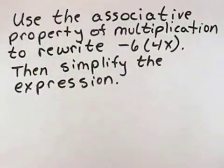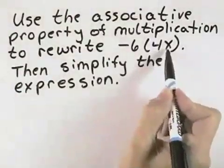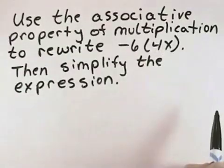Use the associative property of multiplication to rewrite negative 6 times the quantity 4 times x. Then simplify the expression.